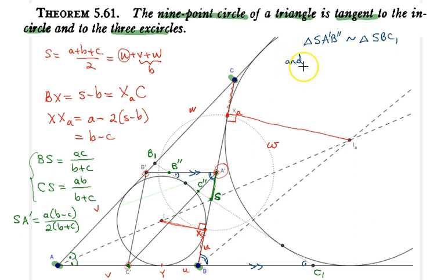And another one as well. So we also know that triangle SA prime C double prime is also similar to triangle SCB1. So SA prime C double prime, this tiny triangle, is similar to SCB1.